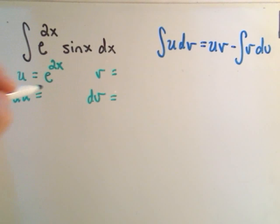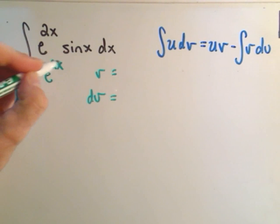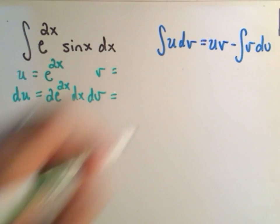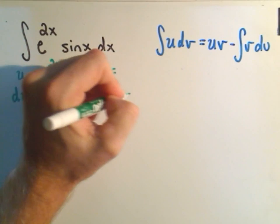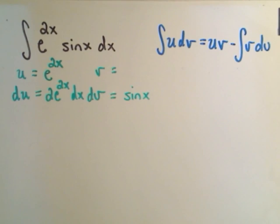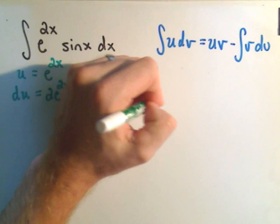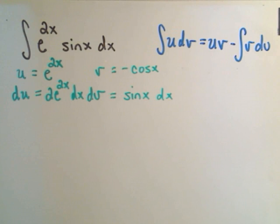So I'm going to let u equal e to the 2x. Again, by the chain rule, we'll get e to the 2x. We've got to multiply by the derivative of the upstairs part. So we'll get 2e to the 2x dx is our derivative. Our dv, we'll simply let that be sine x. And if we integrate sine x, we get negative cosine x. I guess technically I should tack the dx onto the dv part.